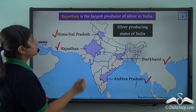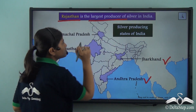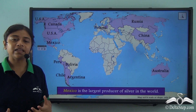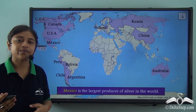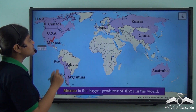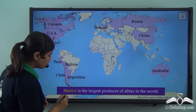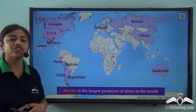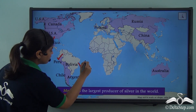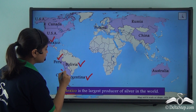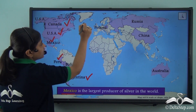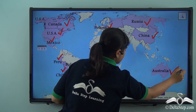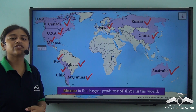Out of all these states, Rajasthan is the largest producer of silver in India. Globally, Mexico is doing very well — it is the largest producer of silver in the world. Other leading producers of silver are Peru, Bolivia, Argentina, Chile, USA, Canada, Poland, Russia, China and Australia.